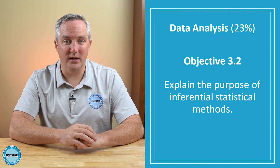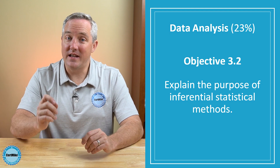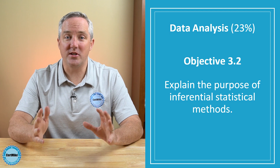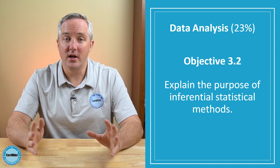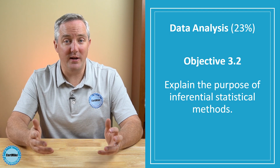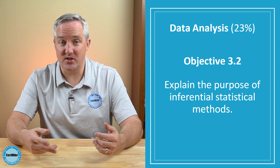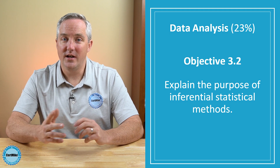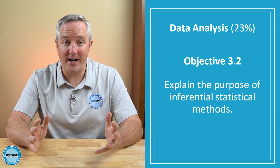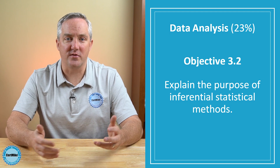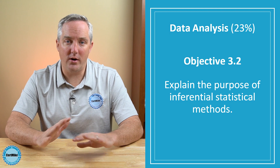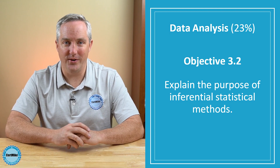The next objective is about inferential statistical methods, and now we have a different verb — we're back to 'explain.' This means that you need to understand these techniques, but you won't actually have to do the math yourself. You'll need to be able to explain some statistical tests like t-tests and chi-squared tests. You'll also need to understand z-scores, p-values, and hypothesis testing, as well as the use of simple linear regression and correlation. I'll walk you through each of these in detail in the video course and book.